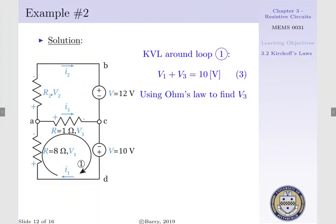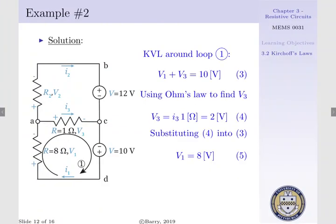Now V3 can be solved for the fact that we know the resistance of R3, 1 ohm, as well as we were given the current I3 is equal to 2 amps. Such that using Ohm's law, V3 would be equal to I3 times R3, or 2 amps times 1 ohm, or V3 is equal to 2 volts. Now we can substitute this result back into equation 3, such that V1 plus 2 volts would be equal to 10 volts, or V1 is equal to 8 volts.